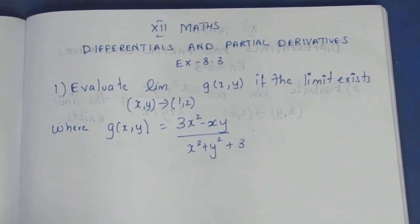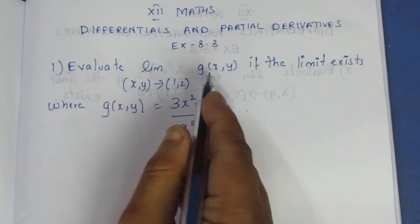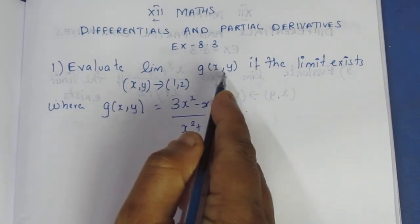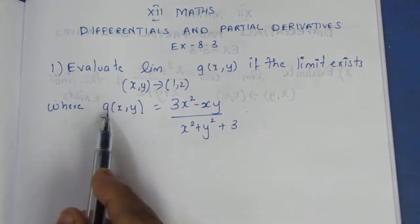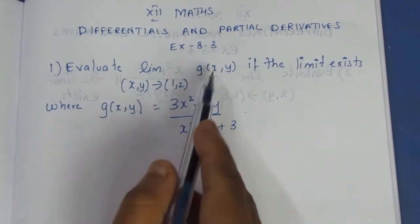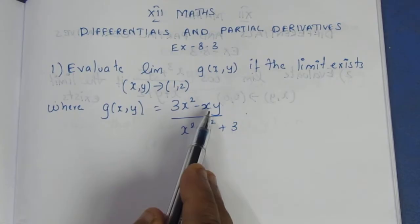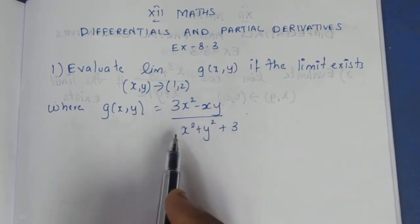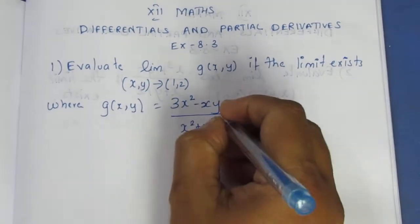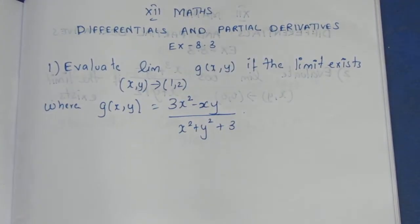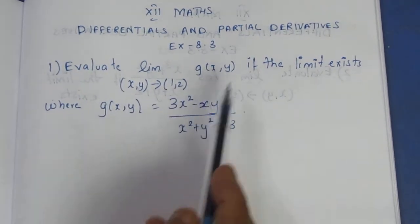Evaluate limit as (x,y) tends to (1,2) of G(x,y), if the limit exists. G(x,y) equals 3x squared minus xy, divided by x squared plus y squared minus 3.